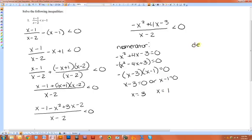And the easier one is the denominator. X minus two equals zero is simply x equals two.